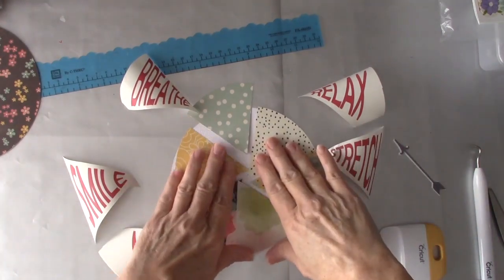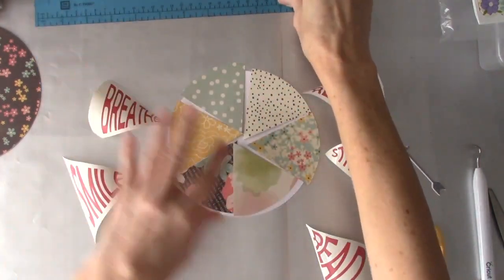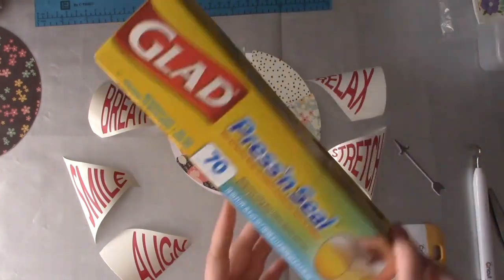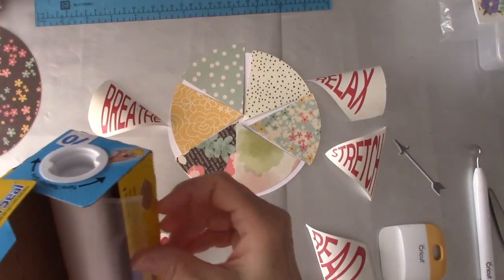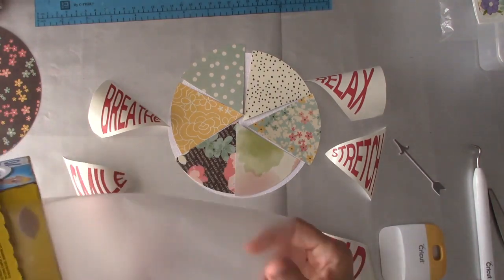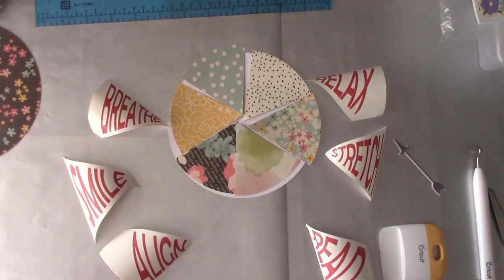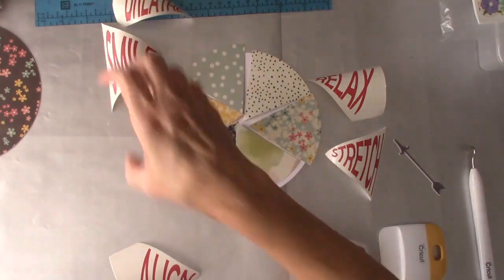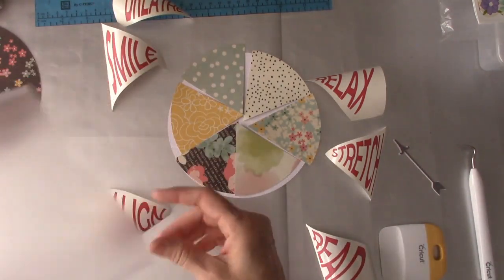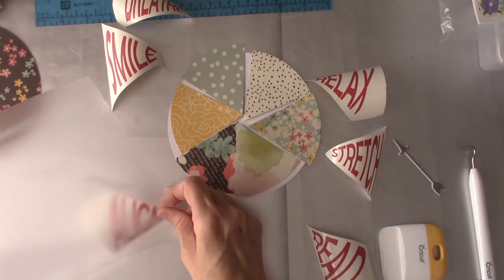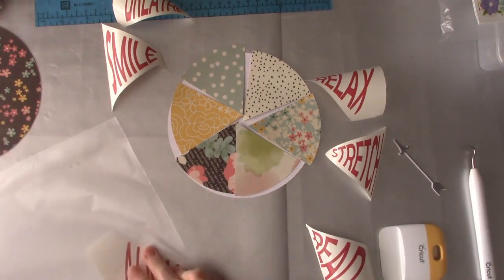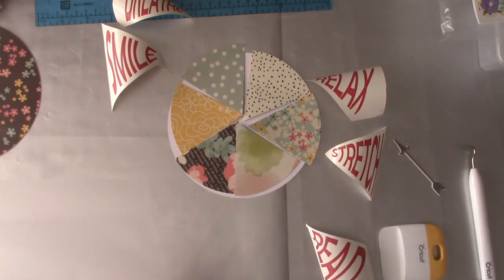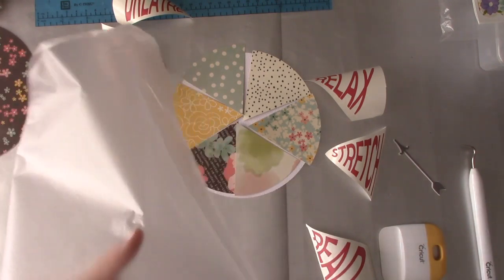So I decided instead of transfer tape, I was afraid it might tear my paper, I am going to use press and seal which is such a great idea. I'm just gonna keep them organized here, put a piece on and then cut around it because I don't need this much.